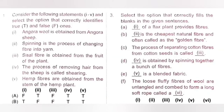Third question: Select the option that correctly fills the blanks. A: Stem of a flax plant provides fibers. B: Jute is the cheapest natural fiber and often called the golden fiber. C: The process of separating cotton fiber from cotton seed is called ginning.